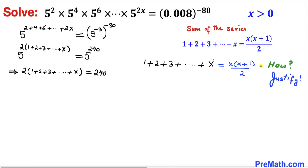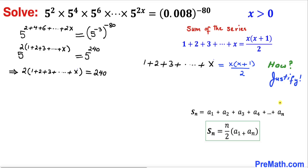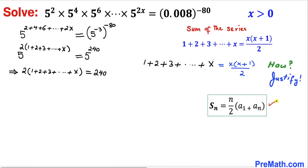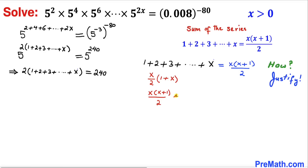To justify this, recall the sum of a series: S of n equals the sum from a sub 1 to a sub n, where a sub 1 is the first term, a sub n is the last term, and n is the total number of terms. In our case, 1 is the first term, x is the last term, and the total number of terms is x. Applying the formula: x divided by 2, times (first term plus last term), gives us x times (x plus 1) divided by 2, which confirms our result.